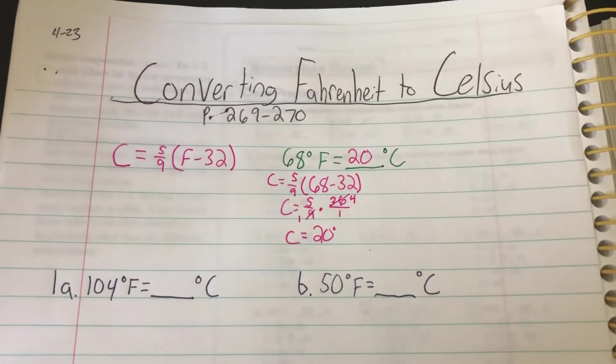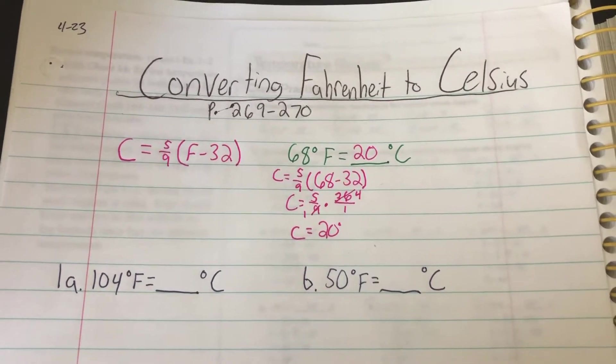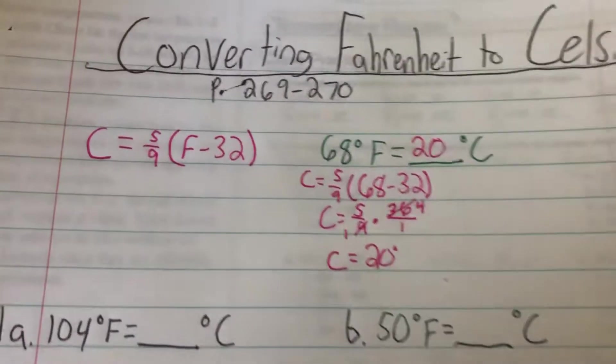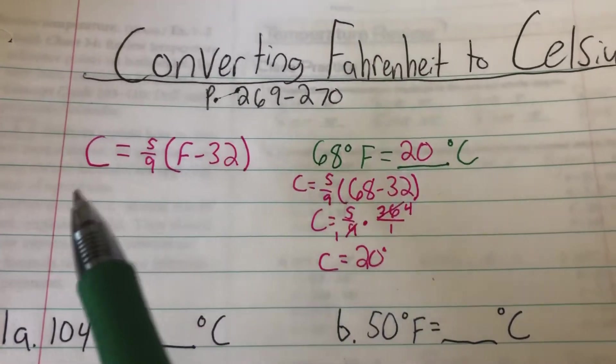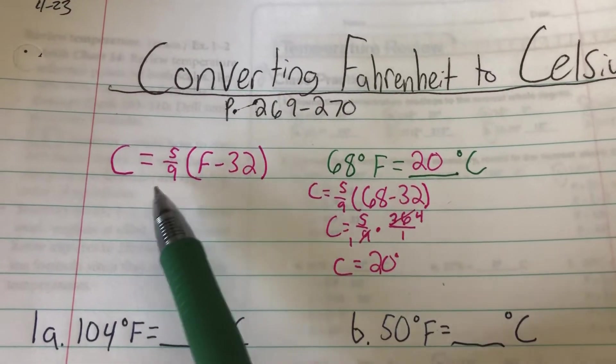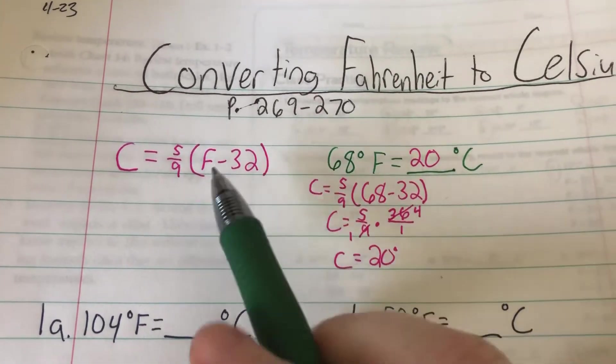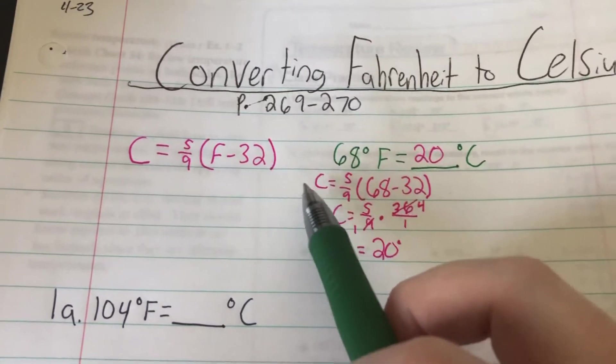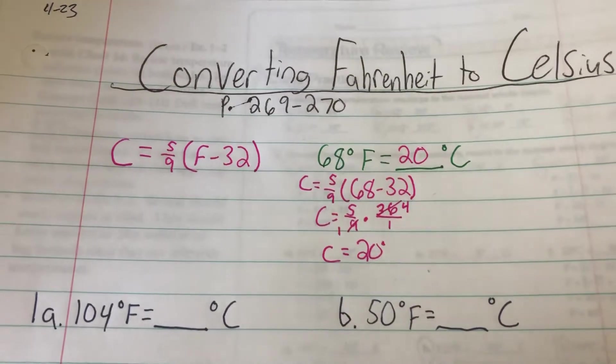Hey sixth grade, I hope all is well. Today for math we're going to be talking about converting Fahrenheit to Celsius. This covers page 269 and 270 in your textbook. This is pretty much the same process as what we did yesterday, just in reverse. The formula is 5/9 times, and then in parentheses, F minus 32. Because F minus 32 is in parentheses, we have to do that before we multiply by 5/9.